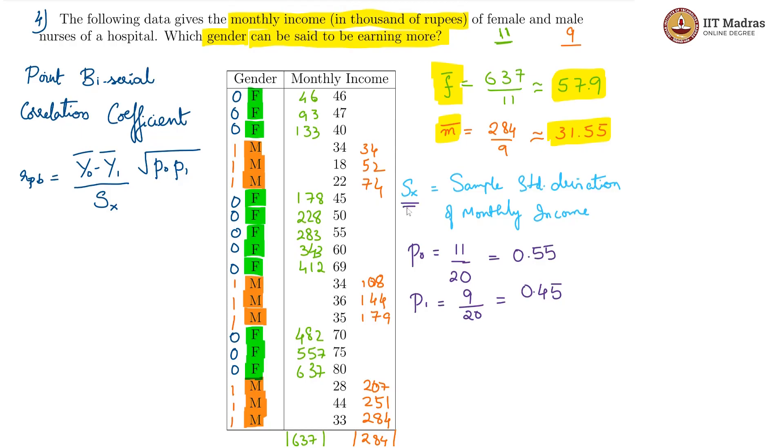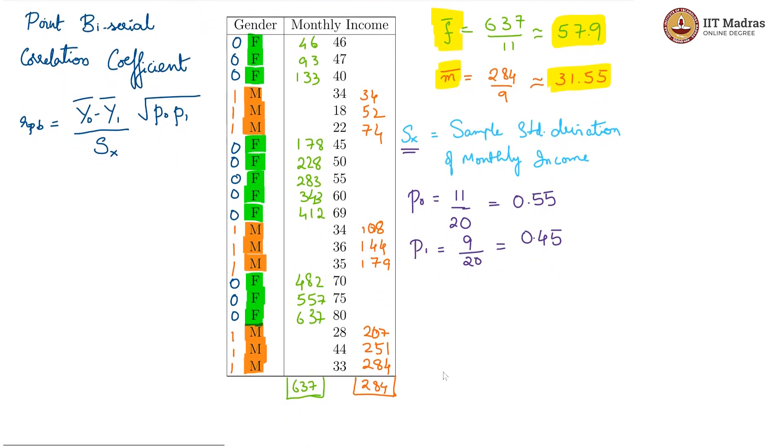Let us do that. We need to first find the mean for the monthly income which we can obtain by, I will call that value i bar, the mean for monthly income which will be the total sum. The total sum is the sum of these two. 637 plus 284 divided by the total number of observations is 20. We get 921 divided by 20 and that is essentially 46.05.